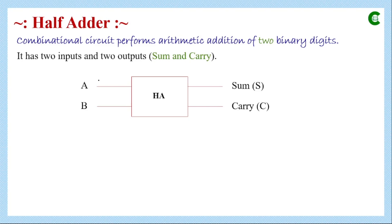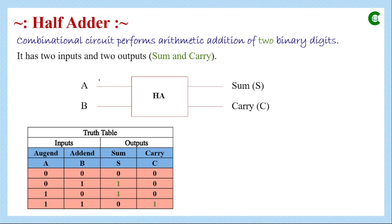This is the block diagram of a half adder circuit where A and B are inputs and sum and carry are outputs. This is the truth table of a half adder circuit. When we add 0 and 0, the sum is 0 and carry is 0. When we add 0 and 1, the sum is 1 and carry is 0. When we add 1 and 0, the sum is 1 and carry is 0. When both inputs are at logical high level (1), the sum will be 0 and carry will be 1.